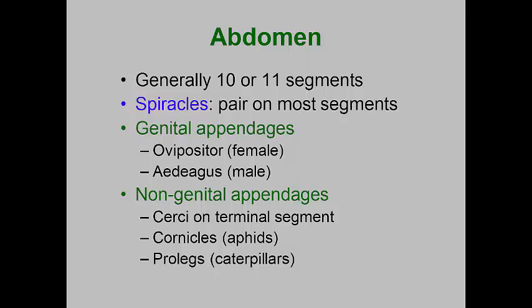Finally, we move to the last insect tagmatum — the abdomen. Entomologists find that the original insect abdomen likely consisted of 10 or 11 original segments. Each segment typically has a pair of spiracles leading to the trachea and air tubes that run throughout the body interior. The abdomen generally contains the organs of digestion, excretion, fat storage, and reproduction. The testes are usually attached to male genitalia, and there is a copulatory apparatus called an aedeagus. Females often have modifications of the last abdominal segments used to lay eggs — the ovipositor. Many insects have a pair of short to long antenna-like structures called cerci. Aphids have alarm tubes called cornicles, and caterpillars and sawflies have fleshy pro-legs on their abdominal segments.